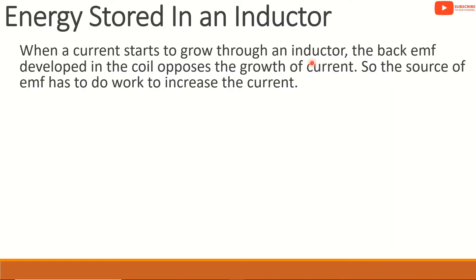When a current starts to grow through an inductor, a back EMF develops in the coil that opposes the growth of the current. This is how the back EMF opposes the growth of the current, which is why the current increases via a source of EMF.